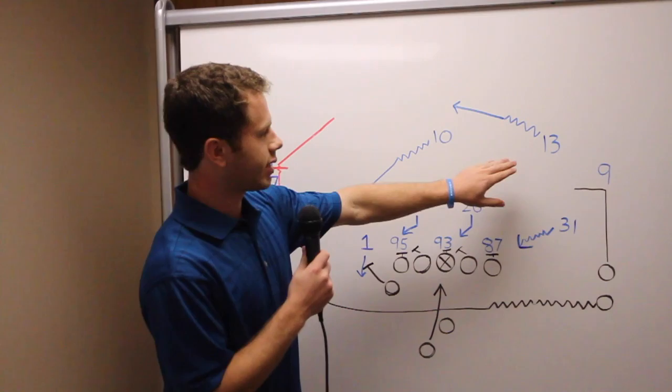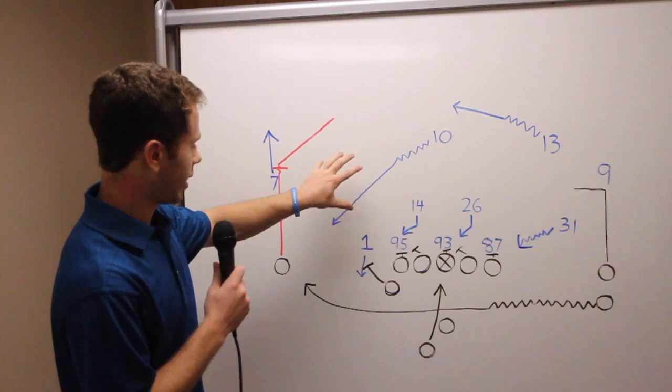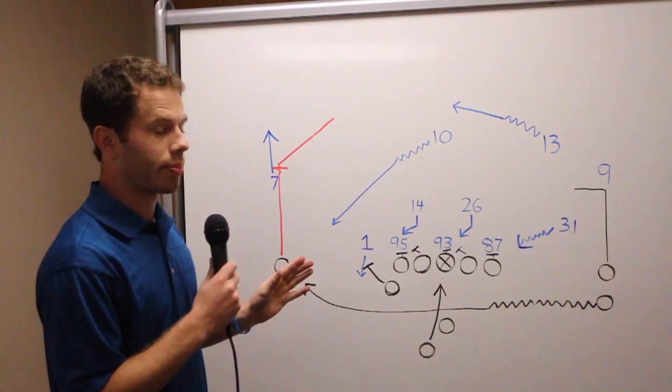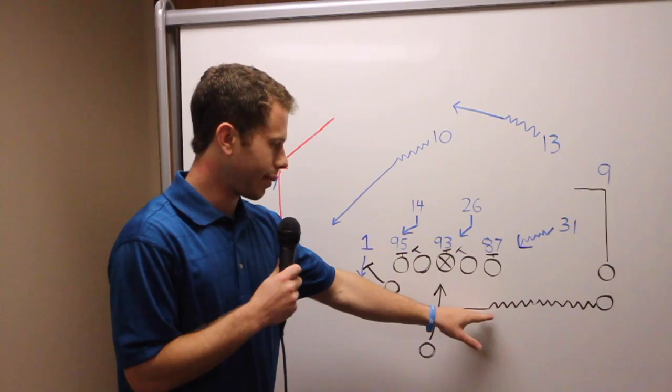Now Ahmaud Thomas is responsible for the deep middle of the field, and Stephen Parker is responsible for coming down and defending this curl-to-flat zone, which is the defender responsible for the throw that Patrick Mahomes wants to target, which is this post-dropout. The receiver goes in motion, and the ball is snapped when he's about here.